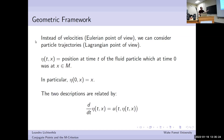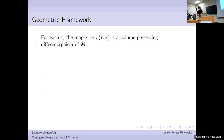These two descriptions — the Eulerian thinking of velocity fields and the Lagrangian thinking of particle trajectories — are related by this equation. Eta is just the flow of u. If you now fix a particular time t and look at the map x into eta(t,x), then this is a volume-preserving diffeomorphism of M.